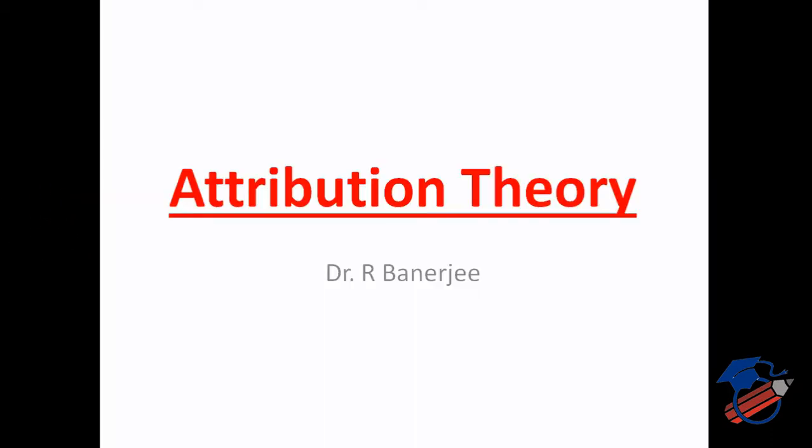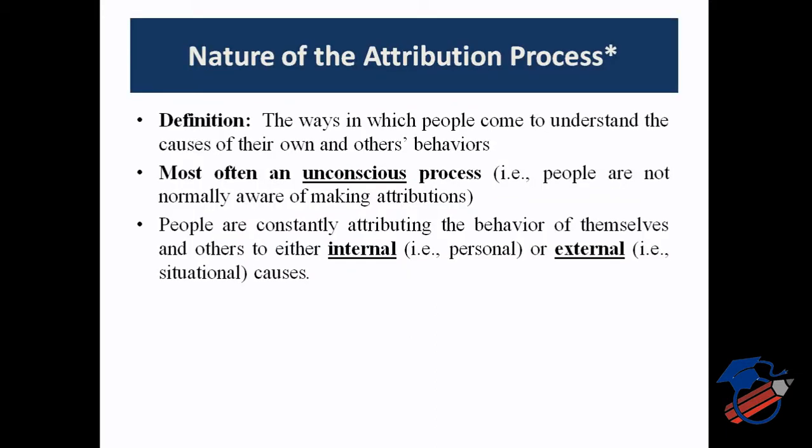Today's topic of discussion is Attribution Theory. Attribution Theory was given by Fritz Heider in 1950. He explained that people have a desire to explain reasons behind actions, and Attribution Theory tries to explain the reason behind the action of a person — it can be one person himself or the action of someone else. The attribution process is a way or method of explaining internal and external factors or causes for understanding the behavior of people.